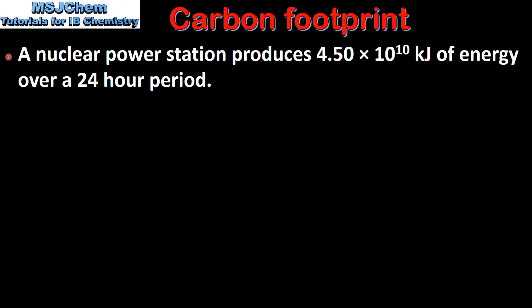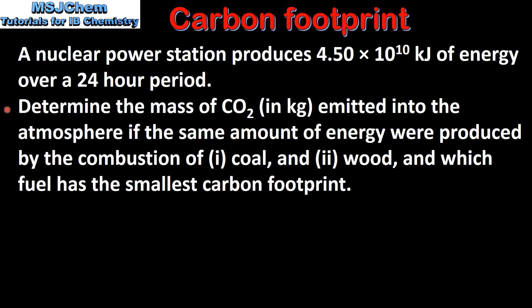In our next example we'll compare the carbon footprint of two fuels. A nuclear power station produces 4.5 times 10 to the 10 kilojoules of energy over a 24-hour period. Determine the mass of carbon dioxide emitted into the atmosphere if the same amount of energy were produced by the combustion of: one, coal and two, wood — and which fuel has the smallest carbon footprint.